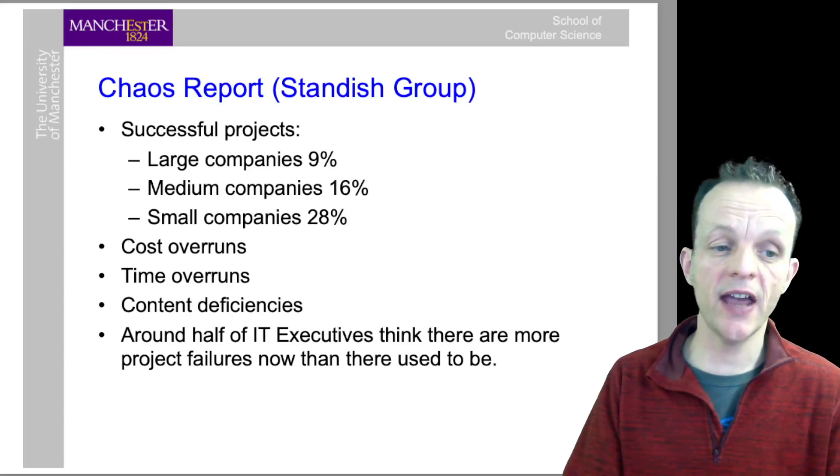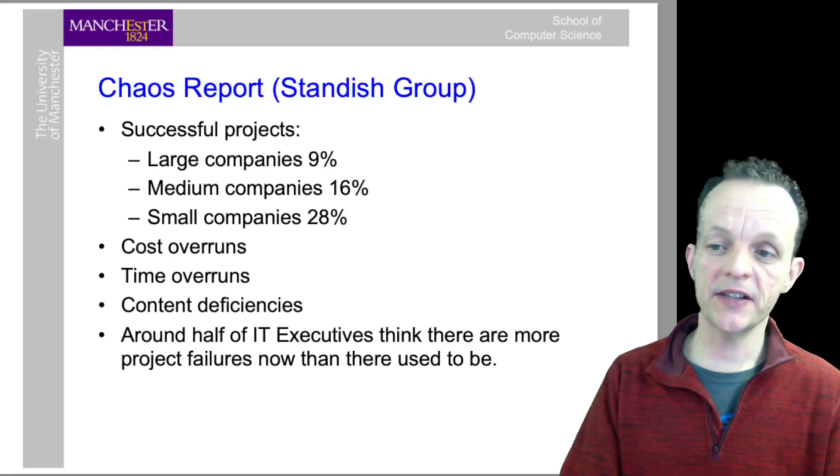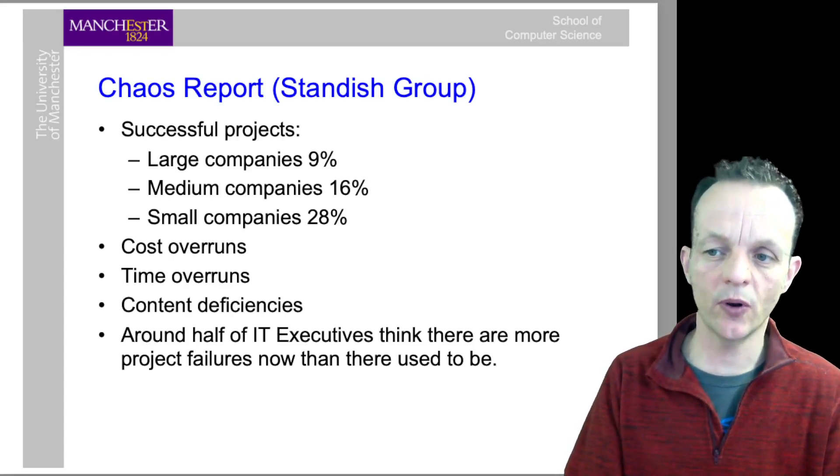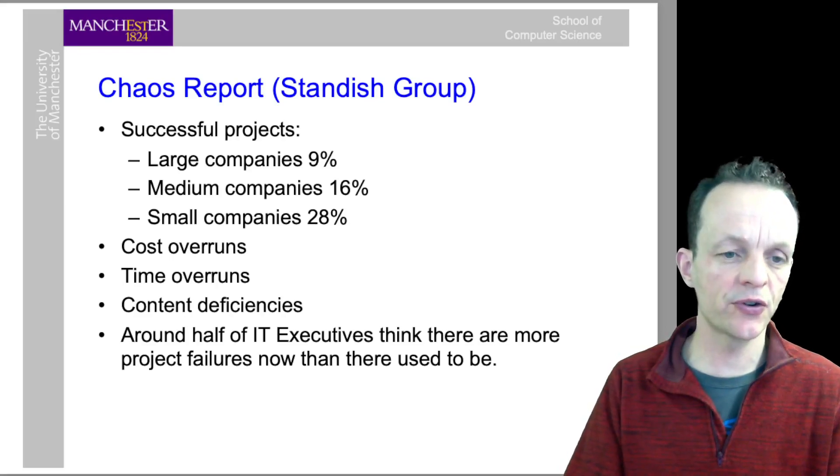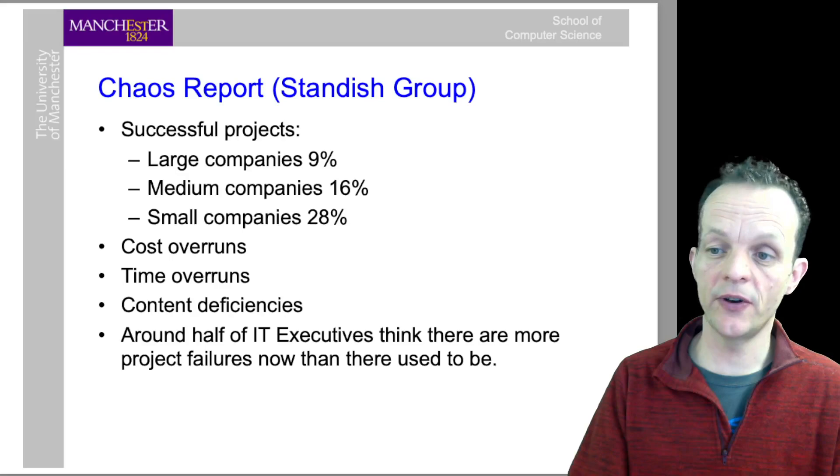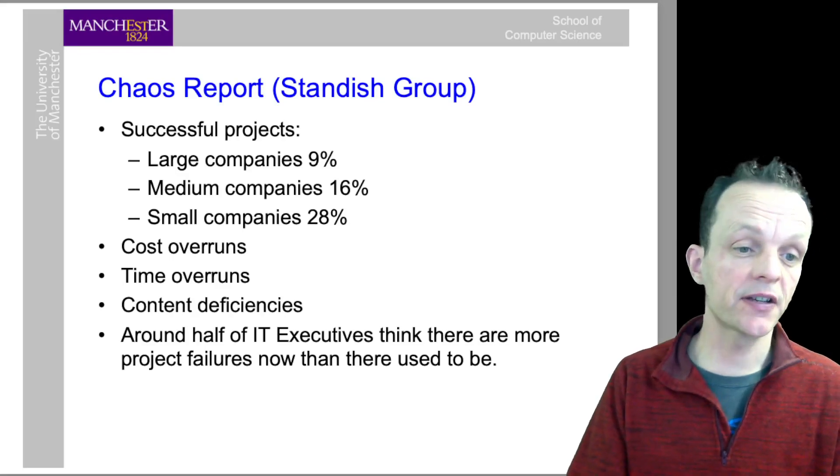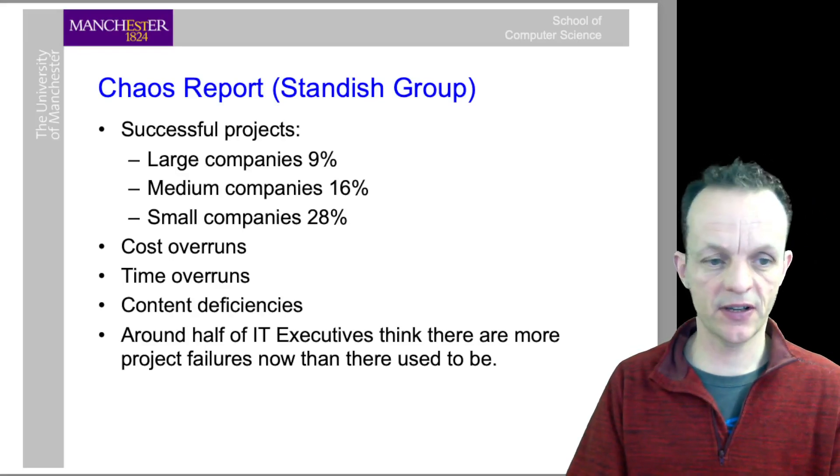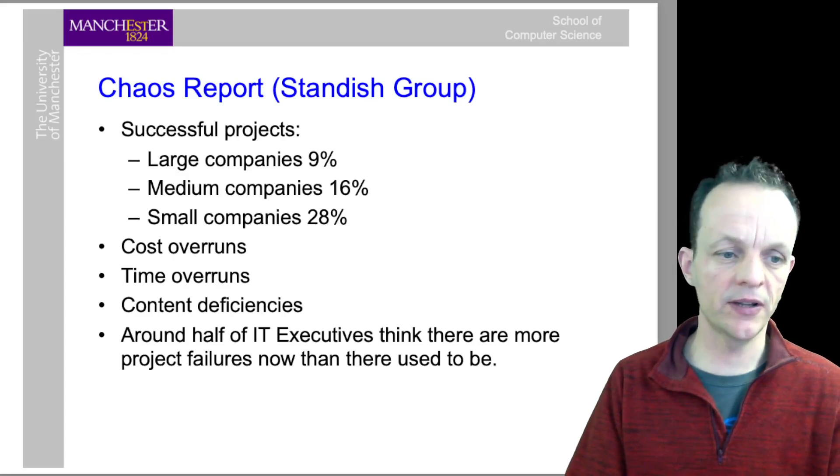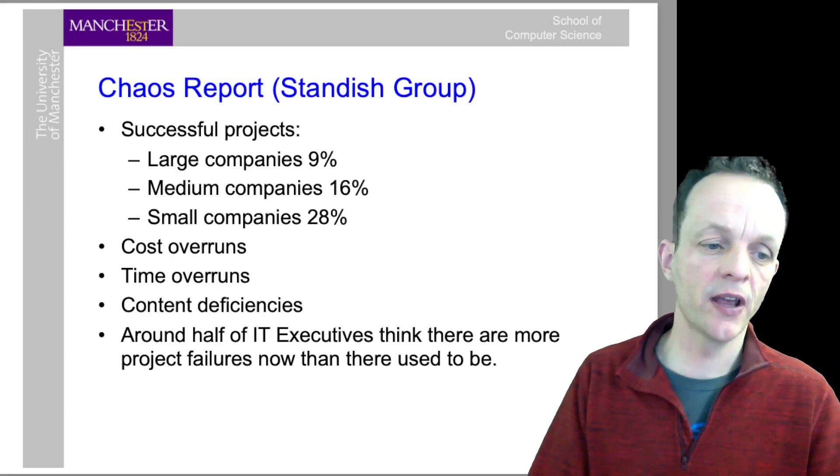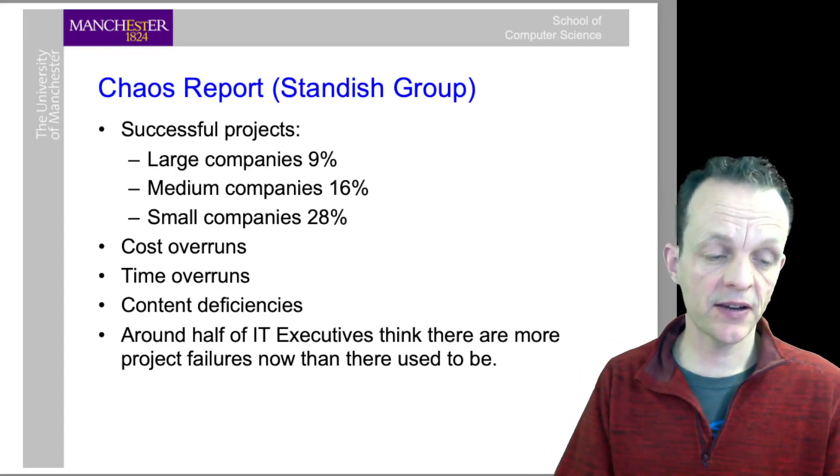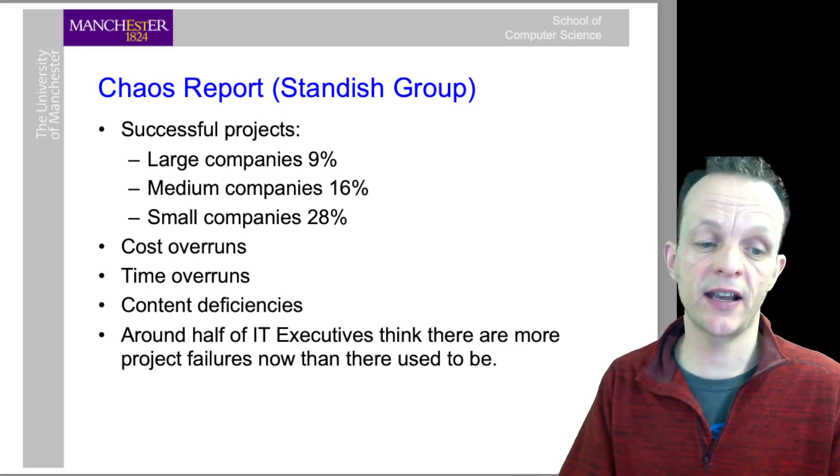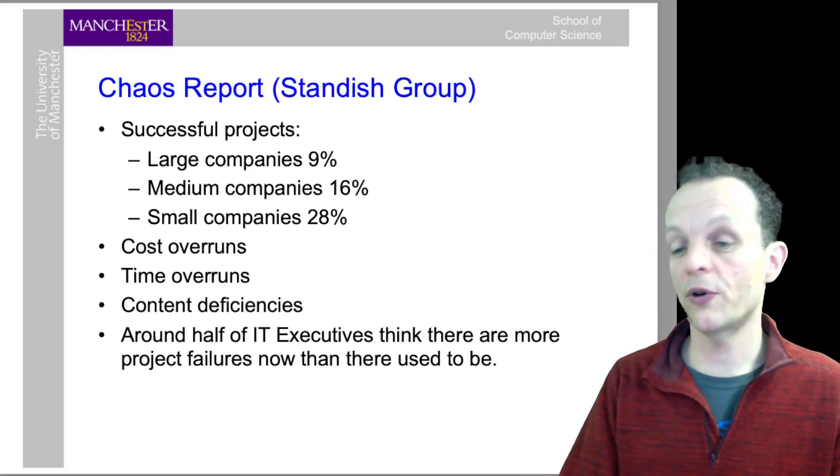A lot of this comes down to estimates. When people estimate how long a project will take, what time and resources and money you need, estimates are often inaccurate, which leads to unsuccessful projects. In the long term it leads to cost overruns and time overruns. According to the Standish Report, around half of IT executives think there are more project failures now than there used to be.